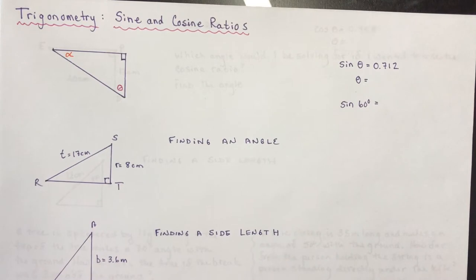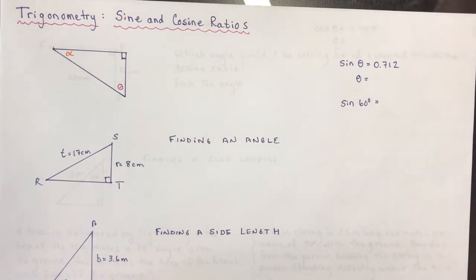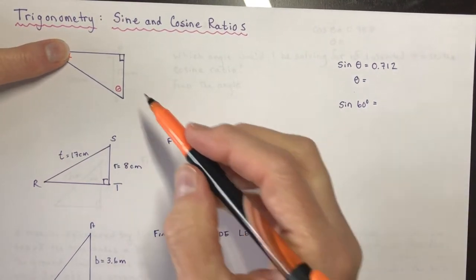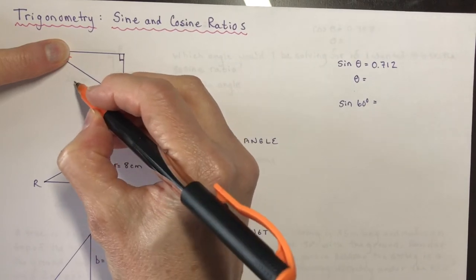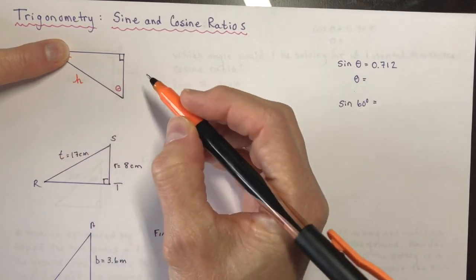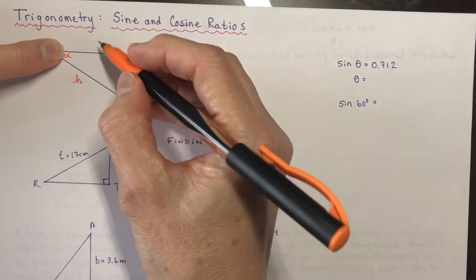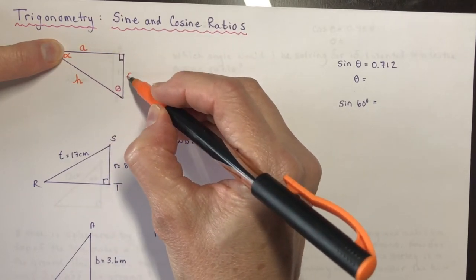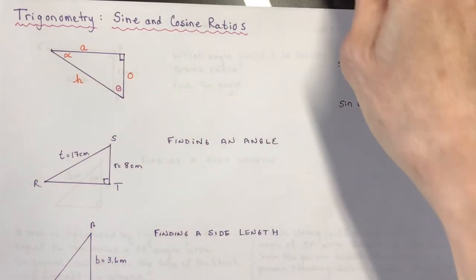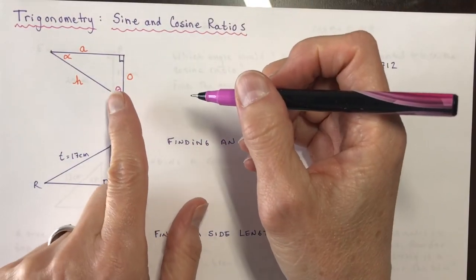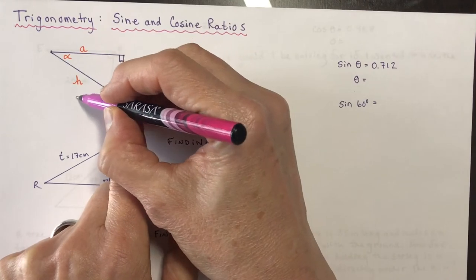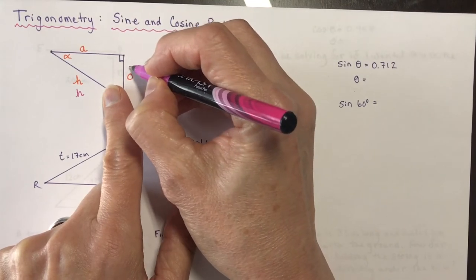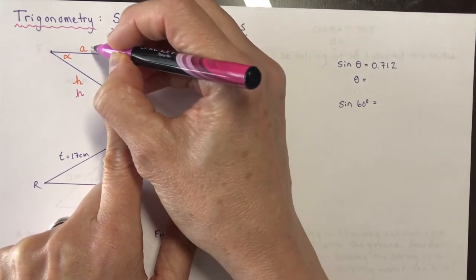Remember, when labeling sides they have to be labeled according to the angle you're at. If I'm at angle alpha, the hypotenuse is always the hypotenuse — I'll label that H. This side is the adjacent side and this is the opposite side. If you move to angle theta, the hypotenuse stays the same, but now this side length becomes adjacent and this one becomes opposite.